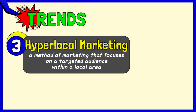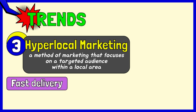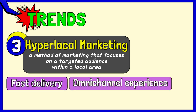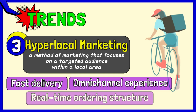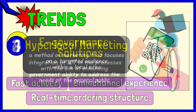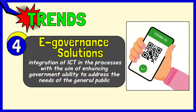Hyperlocal market: consumers have learned to patronize goods and services and interact with small businesses within their local communities. The three must-haves for the hyperlocal market include fast delivery, omnichannel experience, and real-time ordering structure. E-governance solutions refer to the use of ICT and its application by the government to provide information and public services to the people. The ultimate goal of e-governance is to offer enhanced public services to citizens efficiently and cost-effectively.